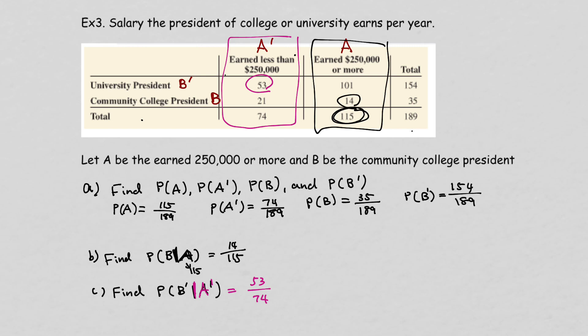Depending on how you want your answer, you can leave it as a fraction or change to a decimal. For 53 over 74, do 53 divided by 74, which gives you approximately 0.716.